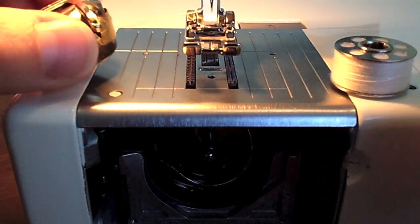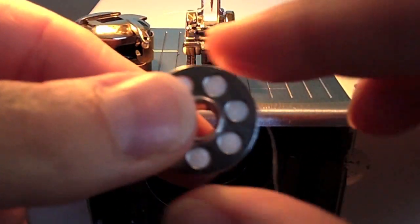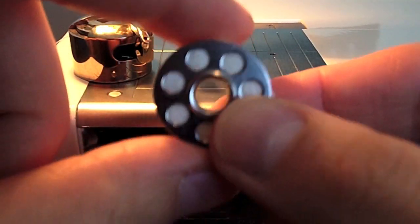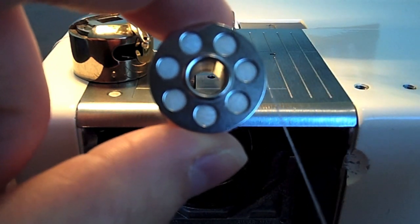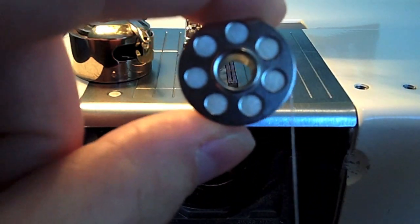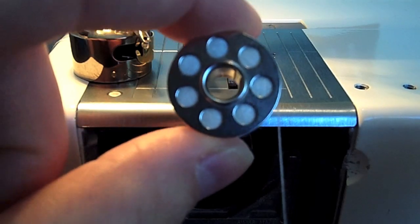Before you put your bobbin into your bobbin case, you need to make sure that your thread is running in a clockwise direction. A good way to remember that is when you hold it up like this, it should look like the letter Q.